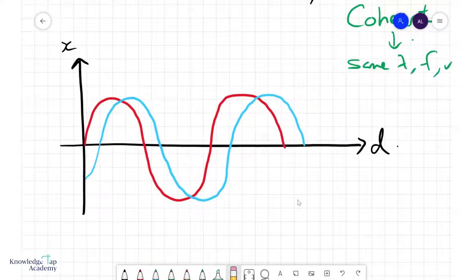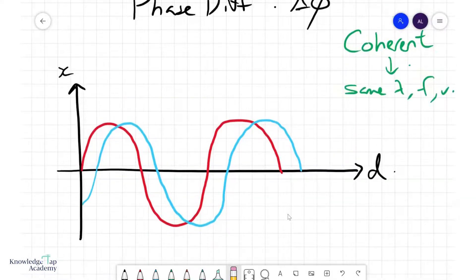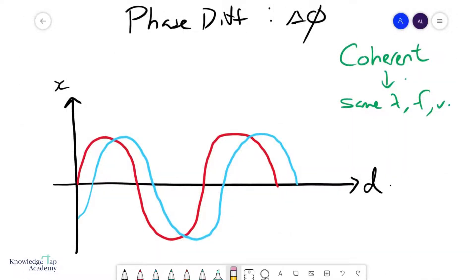these two waves, you can see that they are slightly misaligned. The phase difference is just a way of representing this misalignment. So what we do is look at two points, two similar points on the wave. For example, here and here. Technically, we are looking at two points that are in the